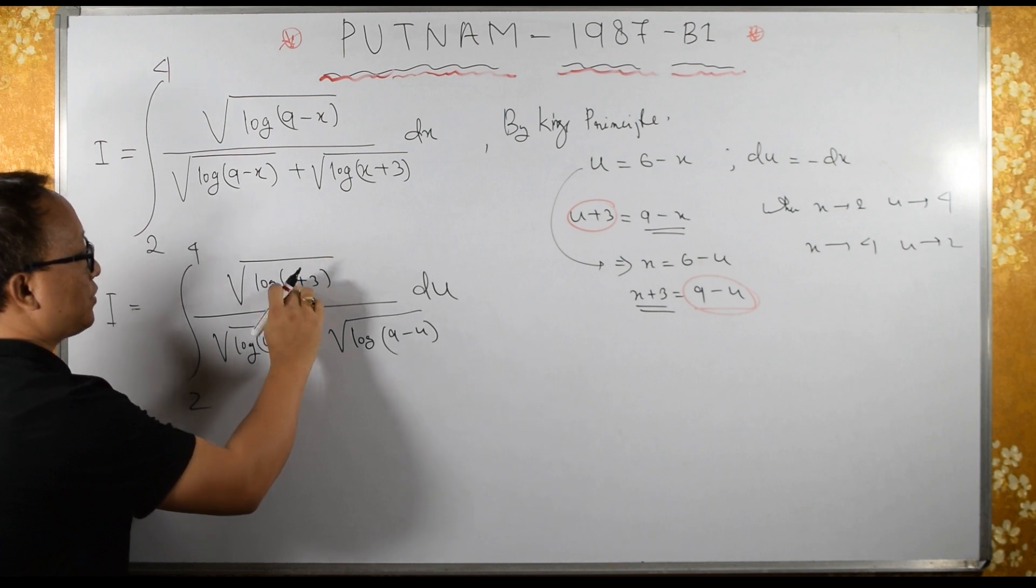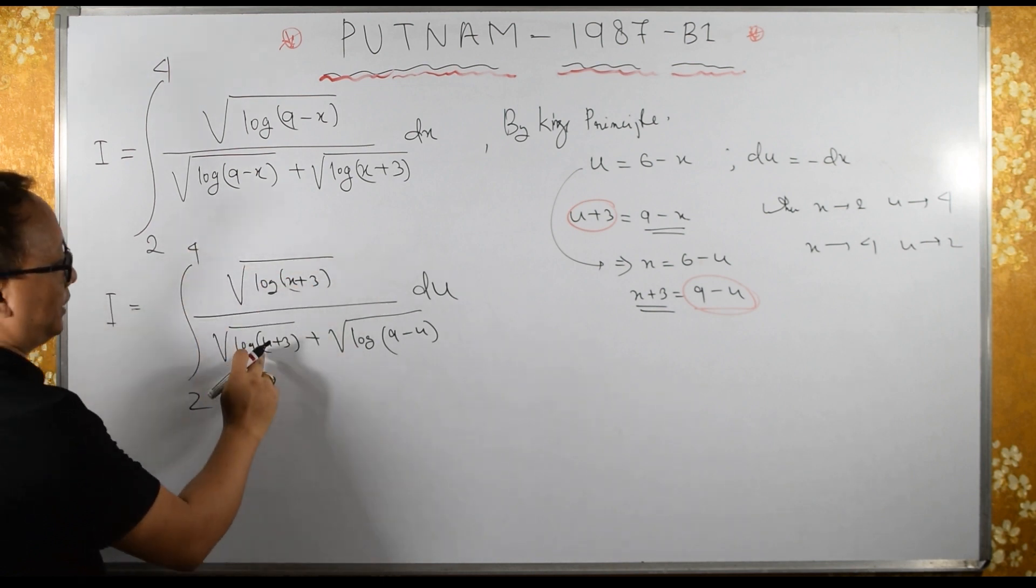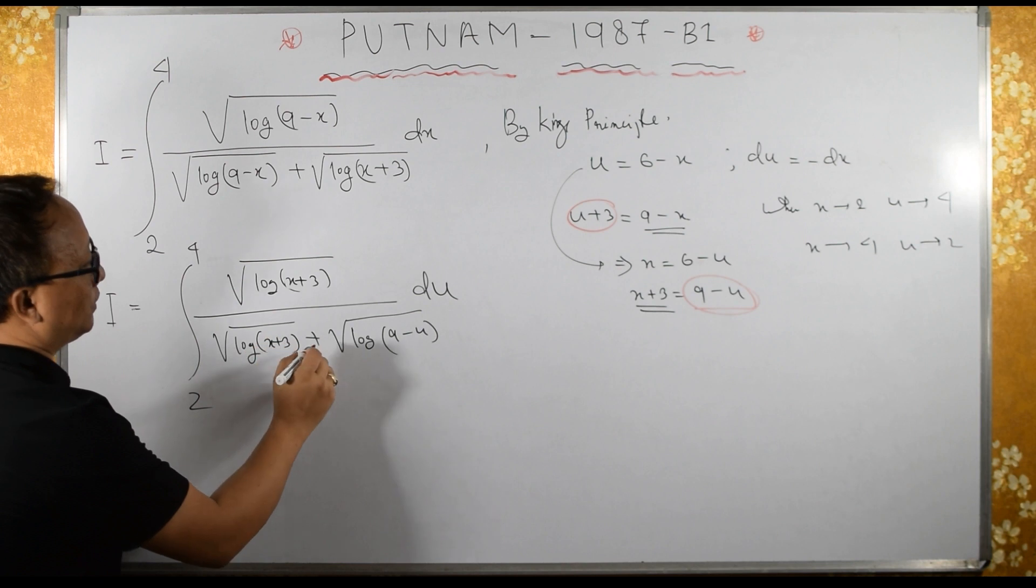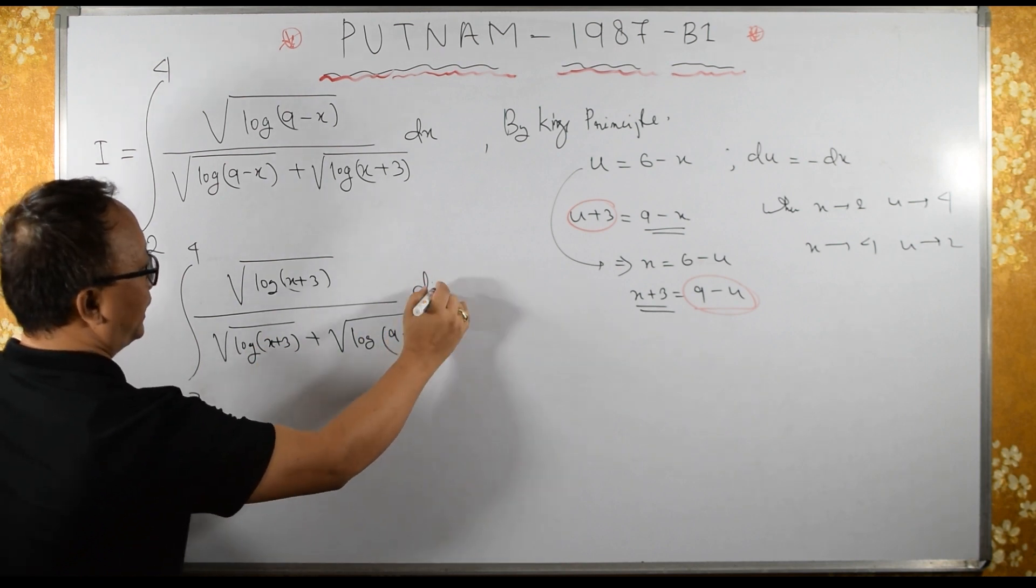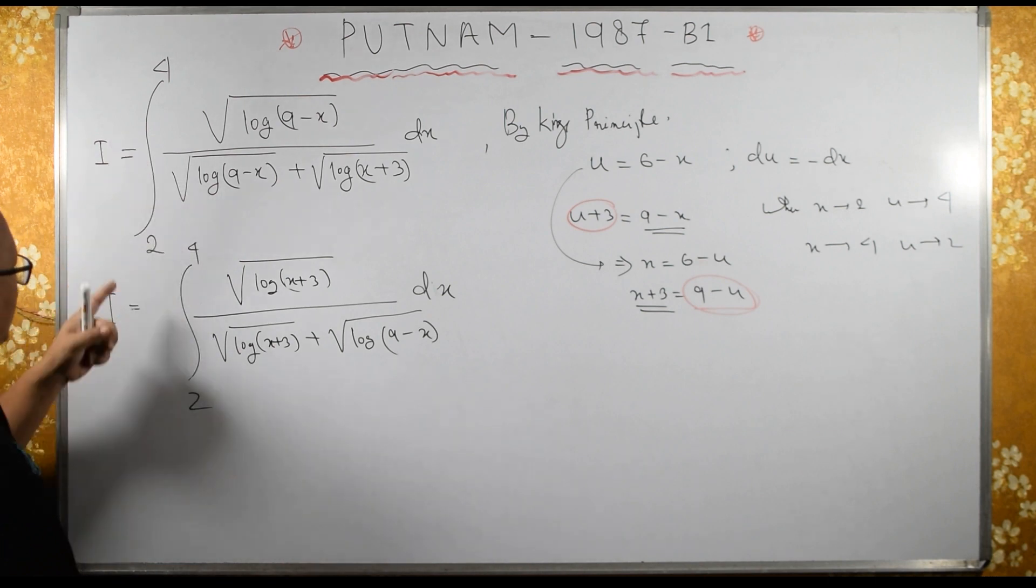If you change x also, the values are same because we have limits. So here if I change x also, values will be same. That is why I am changing x. Now, let us add these two.